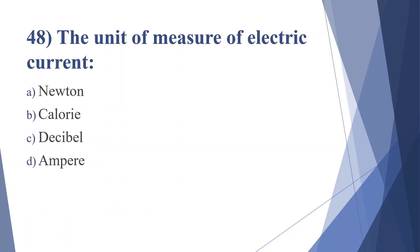Forty-eighth question: the unit of measure of electric current — option A: newton, option B: calorie, option C: decibel, option D: ampere. Answer is option D, ampere.